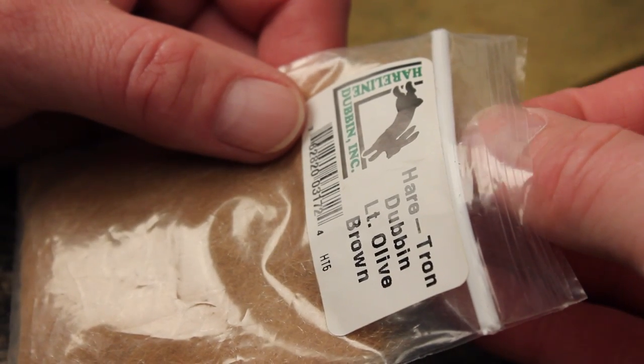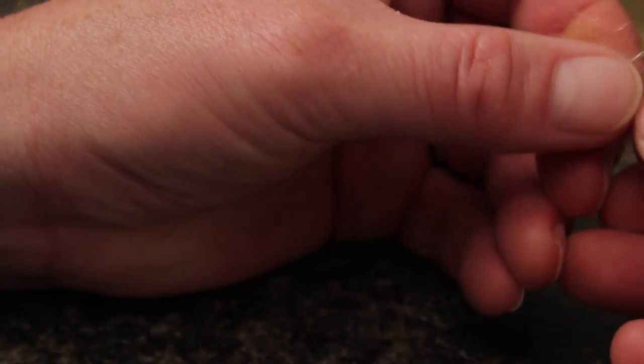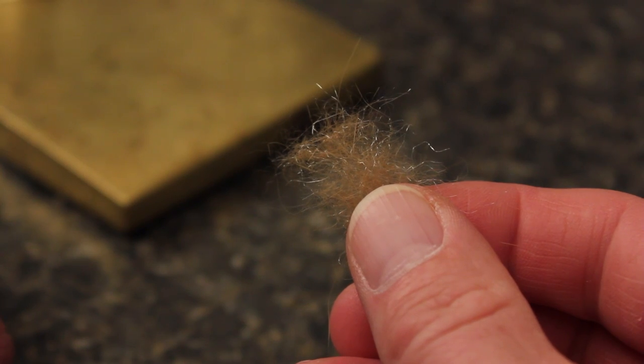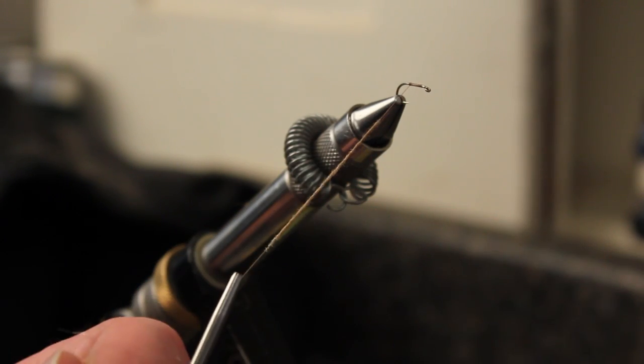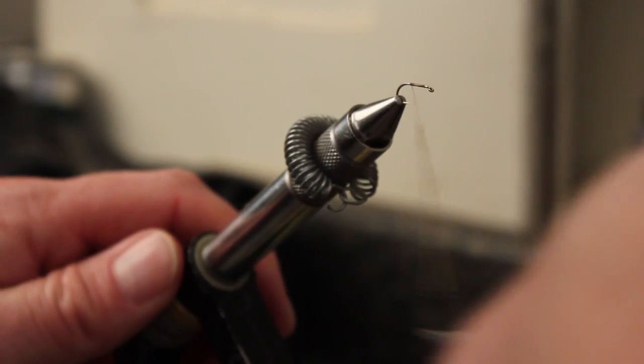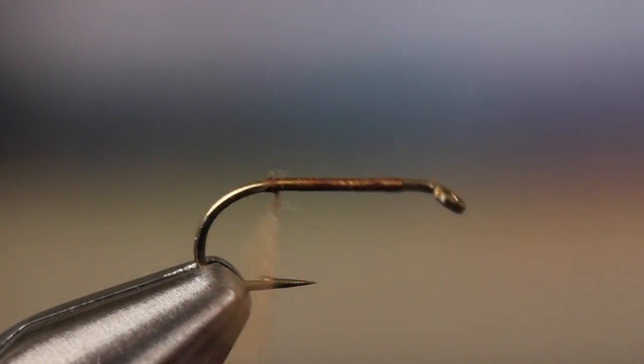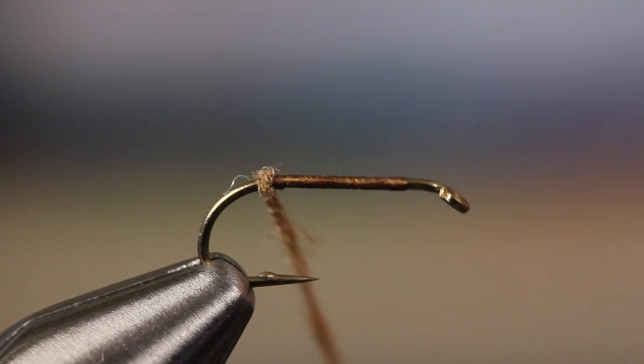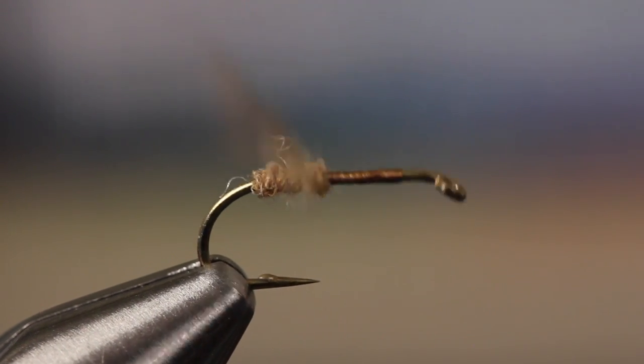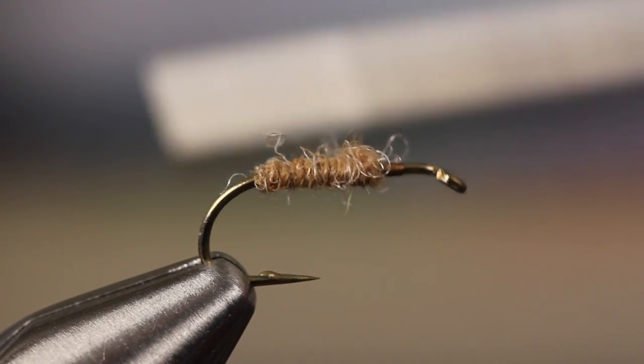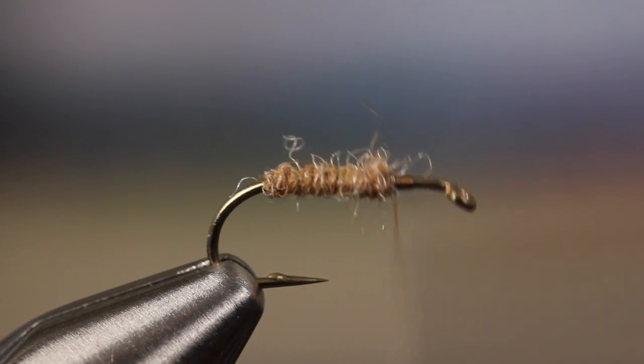For the abdomen, select a color to match the naturals. Here, match using HairTron in a light olive brown. It's a good-looking mix of Rabbit and Antron. Using only small amounts at a time, apply the dubbing to your tying thread to form a thin, lightly tapered dubbing noodle. Take adjacent wraps up the hook shank to form the abdomen of the fly. The dubbing should end at about the two-thirds point on the hook shank.